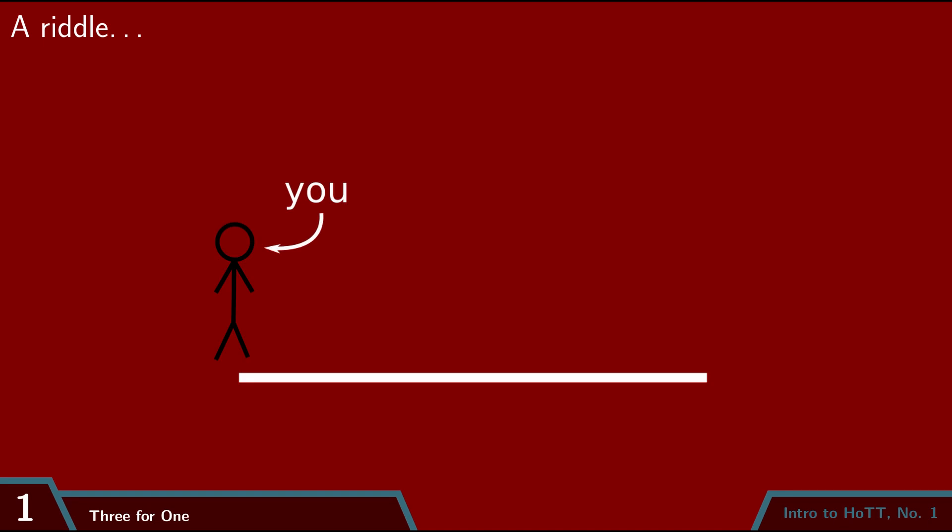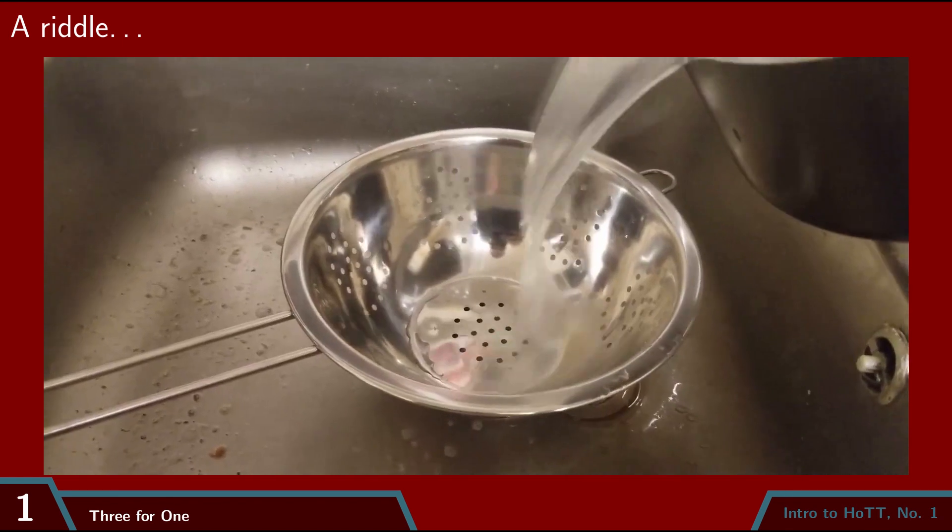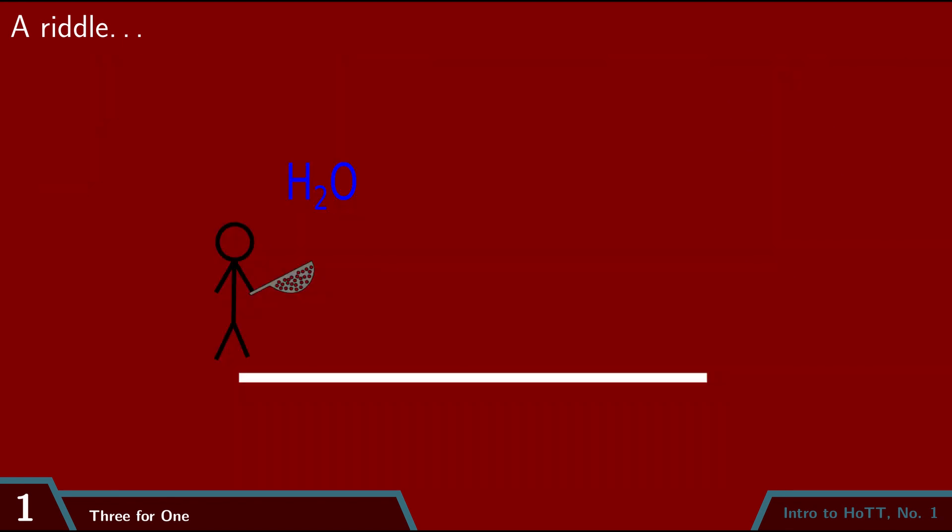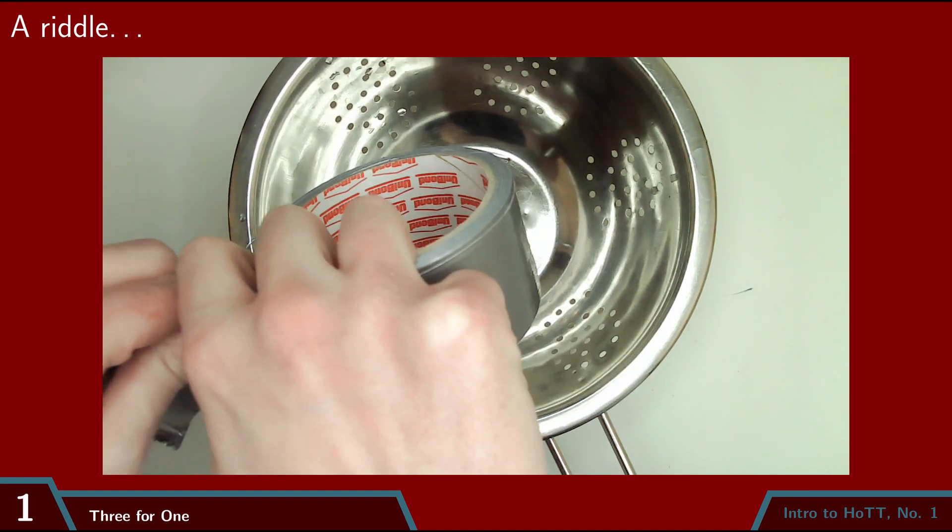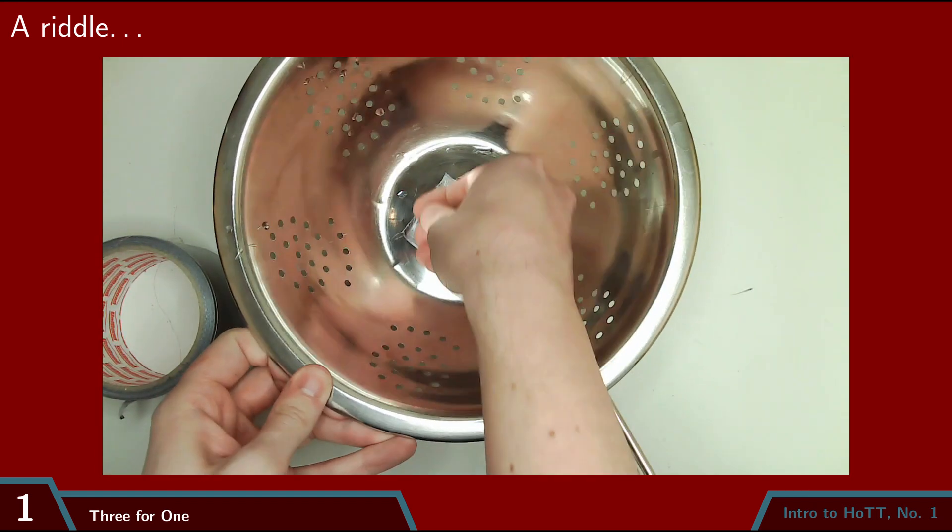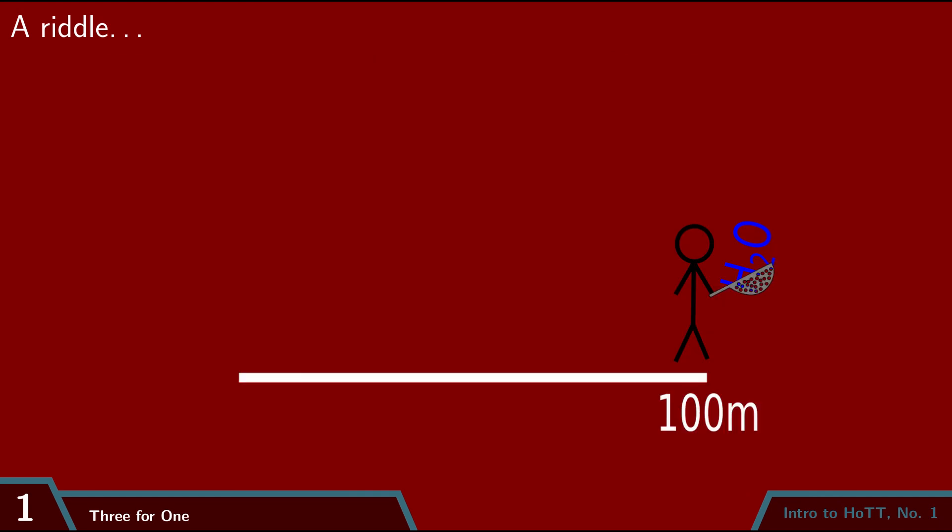So here's a riddle for you. Say I give you a bunch of water and I also give you a colander, you know the thing with the holes for straining pasta, and I ask you to transport the water, say 100 meters, in the colander without spilling any of it. And you can't put the water in a bag or duct tape the holes of the colander or whatever. How do you do it?